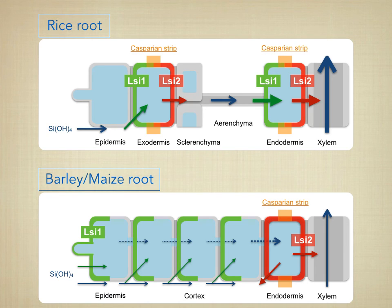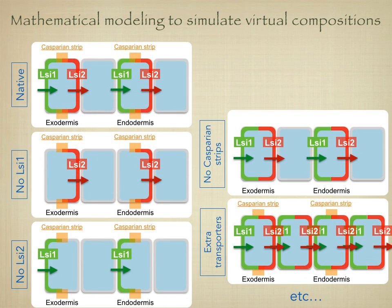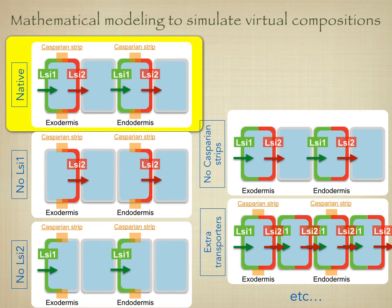By contrast, LSI-1 and LSI-2 are localized at different cell layers in other plant species such as barley and maize. LSI-1 is poorly localized at the epidermis and cortex cells, while LSI-2 is localized at the endodermis without polarity. These differences in localization are one of the major factors responsible for different silicon accumulation in different plant species. Recently, we performed mathematical modeling by changing the localization of LSI-1 and LSI-2, and found that the polarization of LSI-1 and LSI-2 at the exodermis and endodermis is the best combination for high-performance and cost-efficient silicon uptake in rice roots.